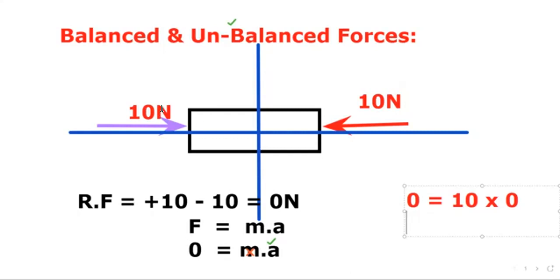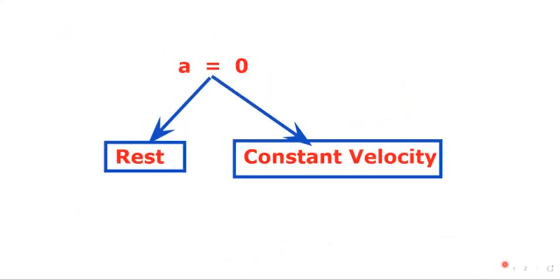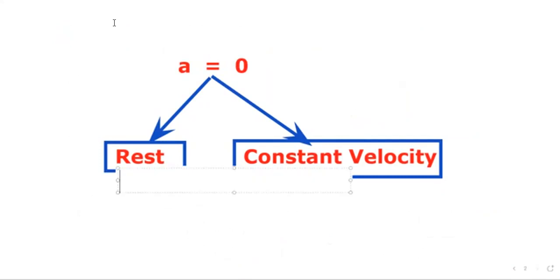The mass is not 0, but the acceleration is 0. When acceleration is 0, we have two possibilities: either the object is in a state of rest — a resting object will have velocity 0 — or the second option is that the object is moving with constant velocity.